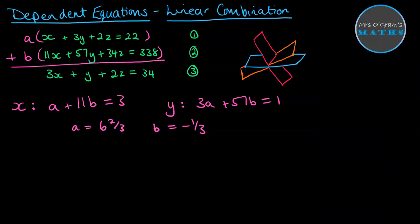We'll do a quick check. So check that the z's column works out as well. So we should have 2a plus 34b will be equal to 2. So 2 times 6 and 2/3 plus 34 times negative 1/3. Yes, that does come to 2.